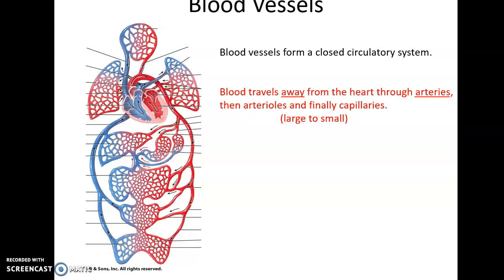When blood leaves the heart, it travels through arteries. Arteries carry blood away from the heart. Arteries will branch and get smaller and smaller until they become arterioles, which are microscopic. And then finally you'll get to the capillaries. Capillaries are a separate kind of blood vessel — they do not fall under the arteries category. They're where the exchange of fluids between the bloodstream and the tissues occurs. As blood flows away from the heart, it goes into smaller and smaller vessels.